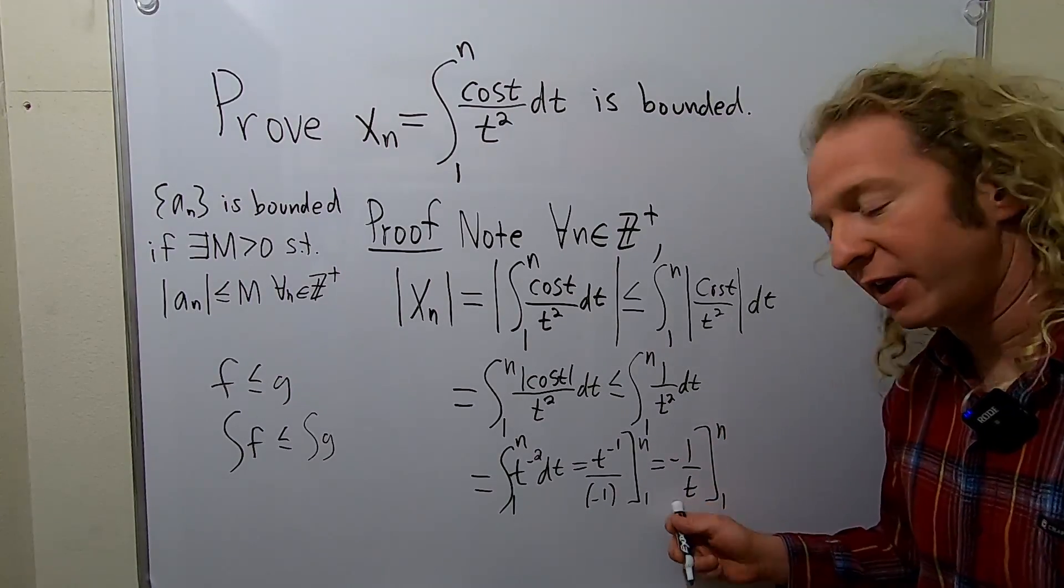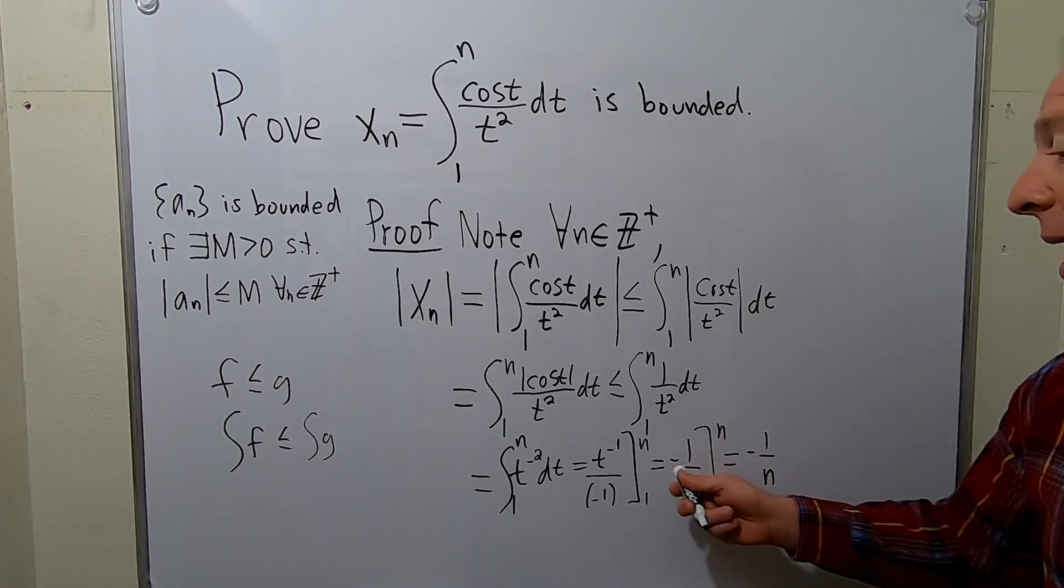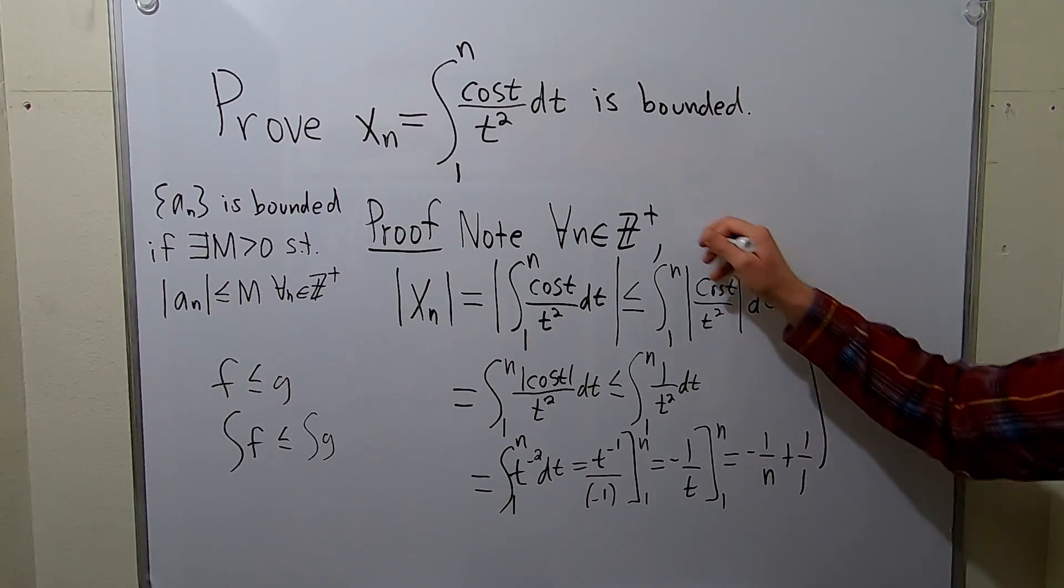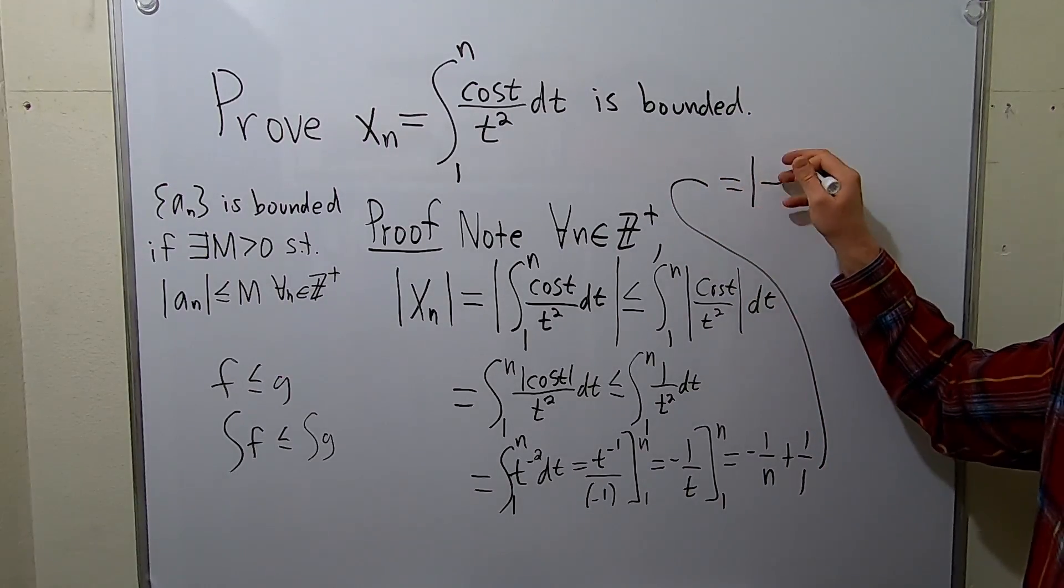And as you know, you plug in the n first. So we get negative 1 over n minus, but it's a plus. So plus 1 over 1. So this is equal to 1 minus 1 over n.